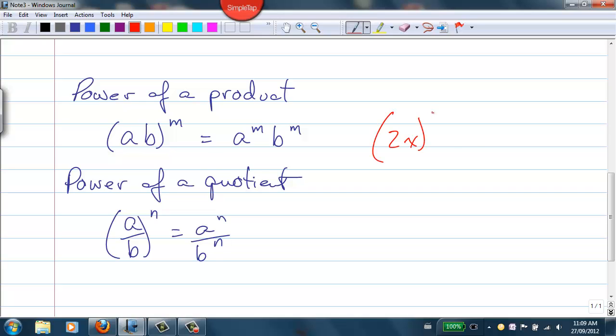Couple of examples, like we did before. 2x to the power of 3 becomes 2 cubed x cubed, or 8x cubed. 5x over 3 to the power of 2 becomes 25x squared over 9.